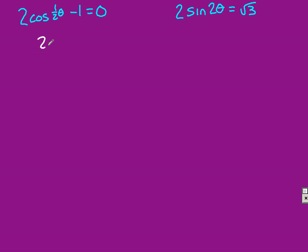In this one here, same thing as before. We'll make it 2 cosine of 1 half theta equals 1 divided by 2, so cosine of 1 half theta equals 1 half.